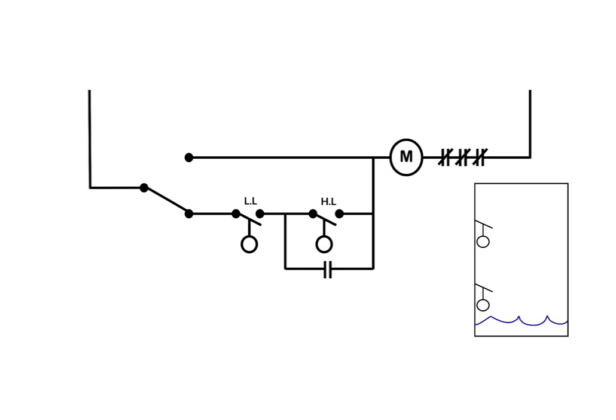As the low-level switch closes, that won't engage until it hits both the low level and high level. And then as the high level drops out, it will continue to run until the low level kicks it out.